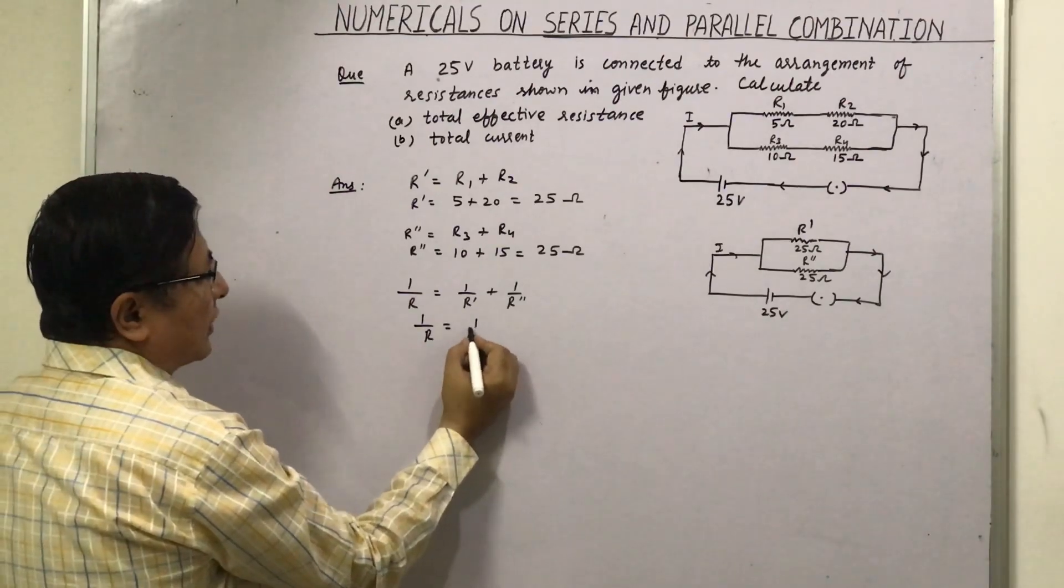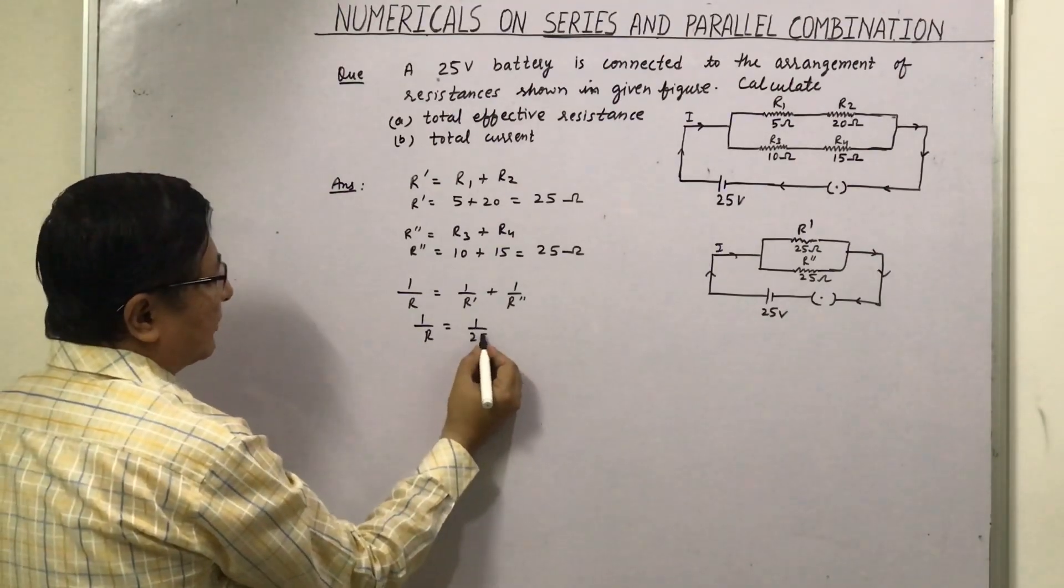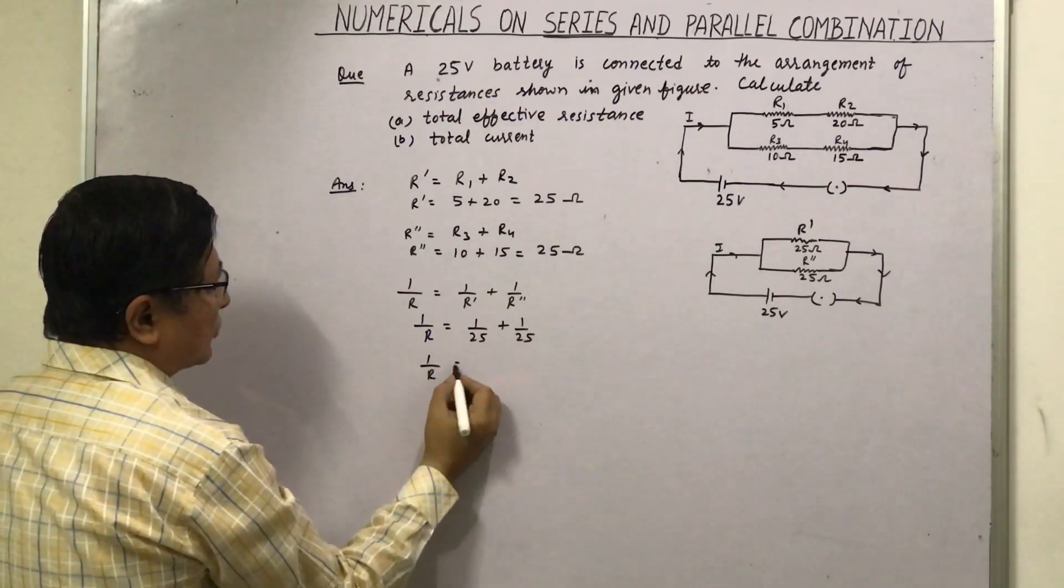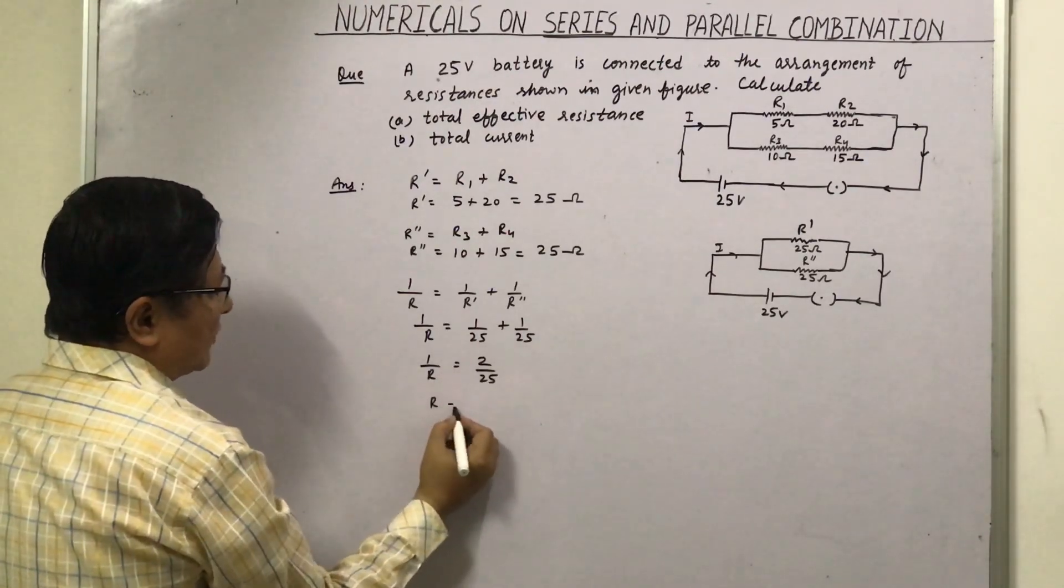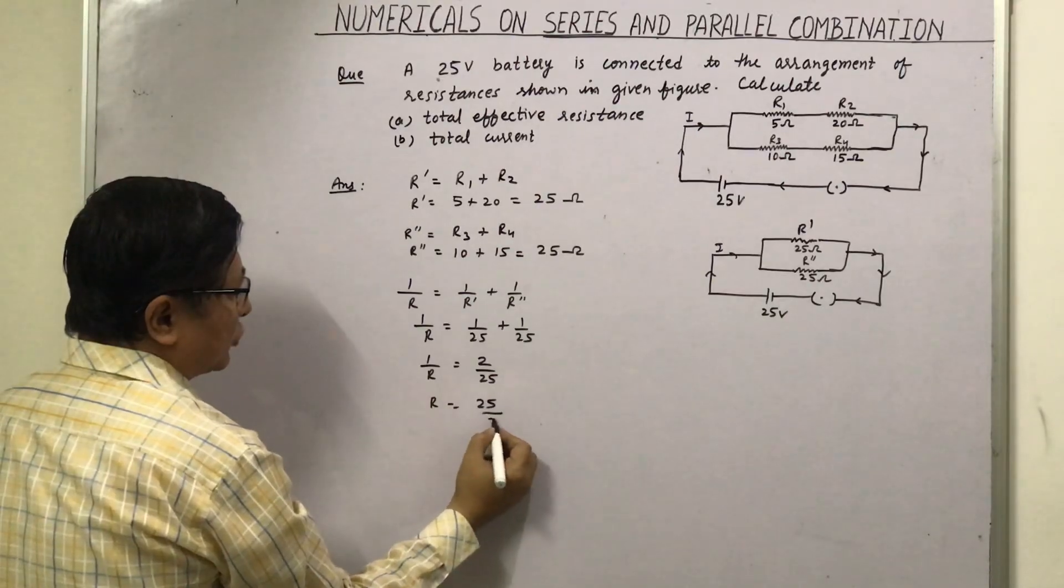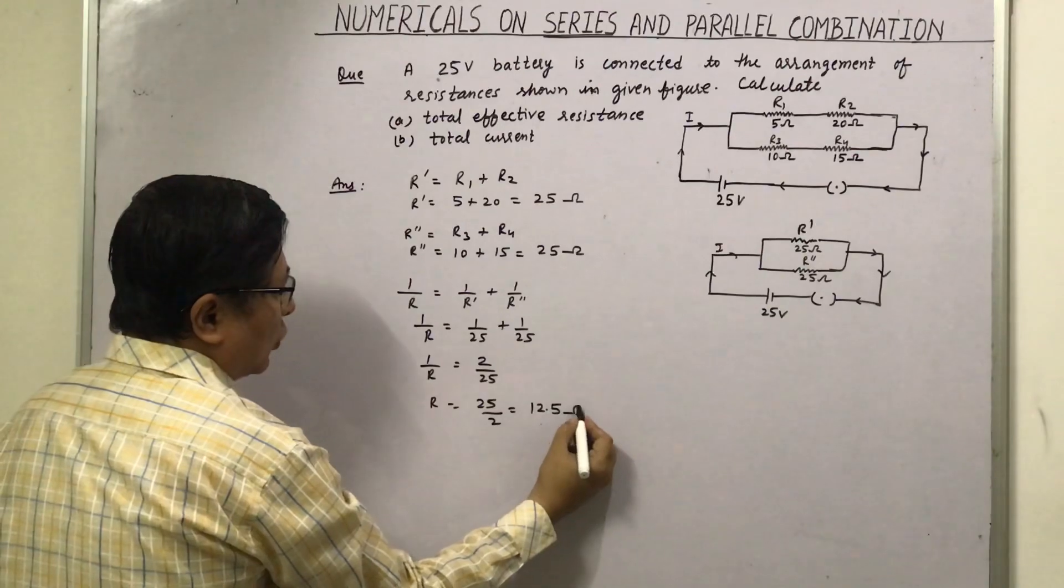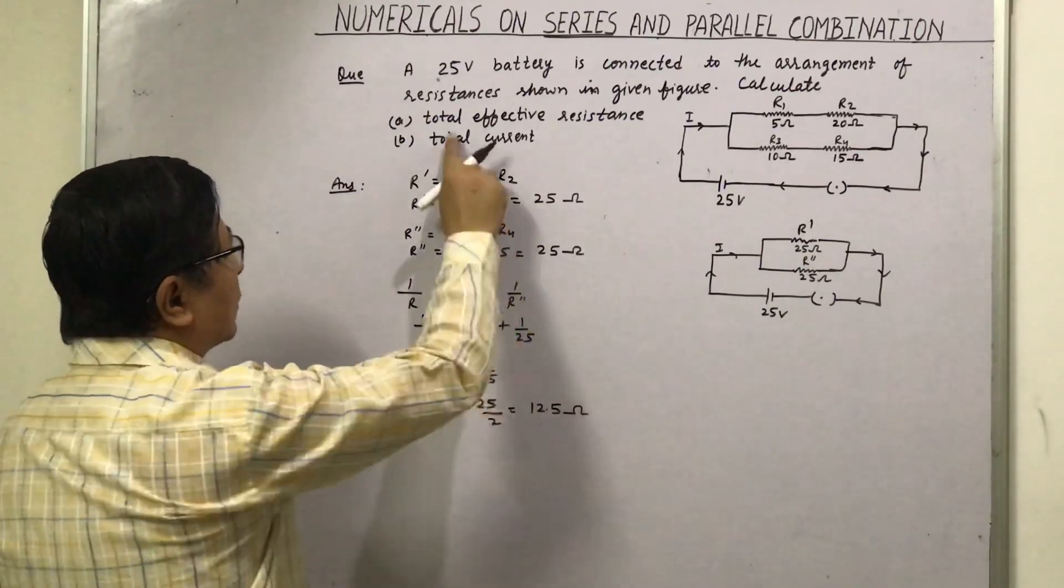1 upon R is equal to 1 upon 25 plus 1 upon 25, and we will solve this. We will get 2 upon 25, and so R will be equal to 25 upon 2, and that is equal to 12.5 ohm. This is the total effective resistance.